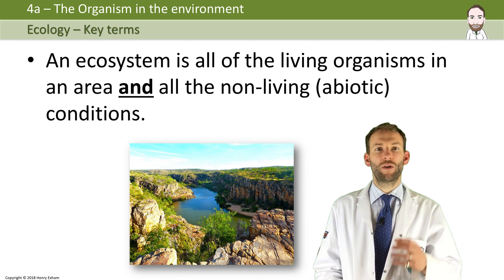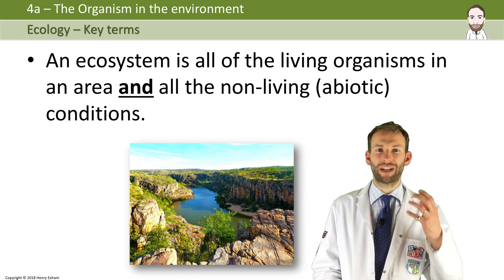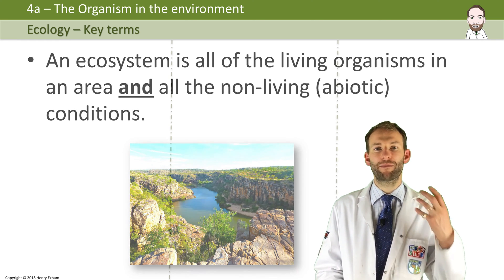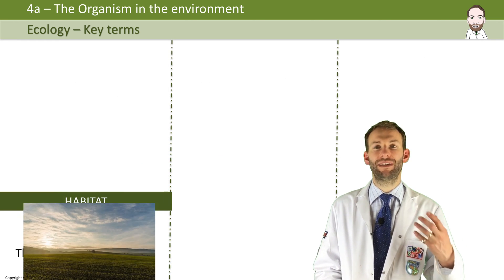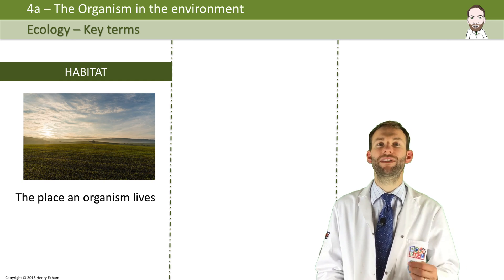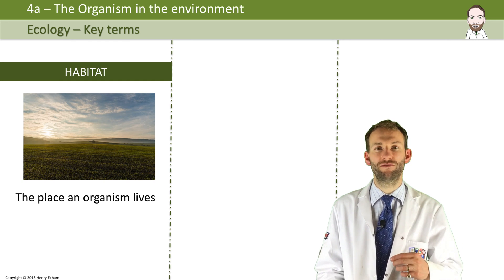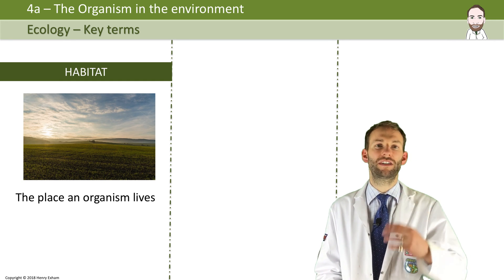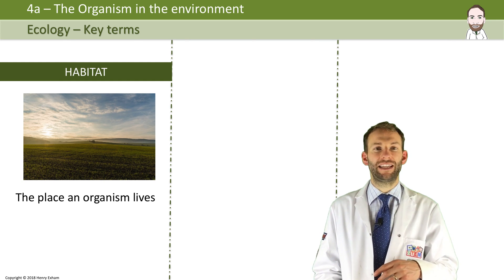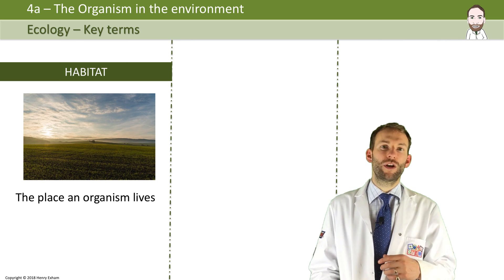What's a habitat? Well, a habitat is simply the place an organism lives. You have small habitats like a drop of rainwater, or a large habitat like a field.